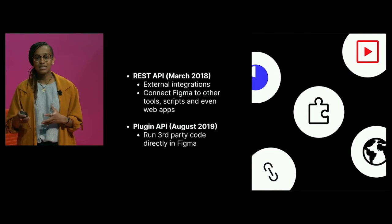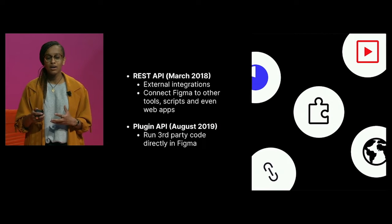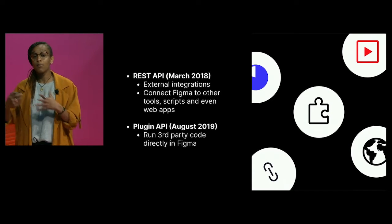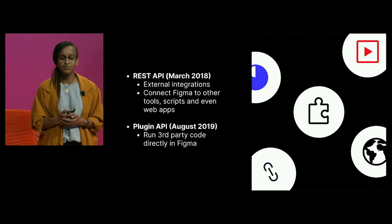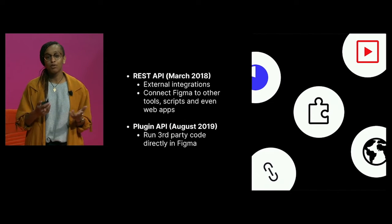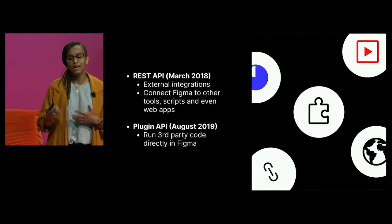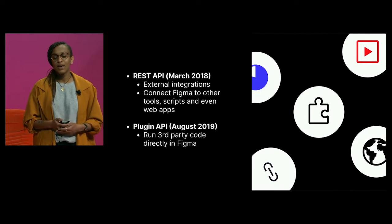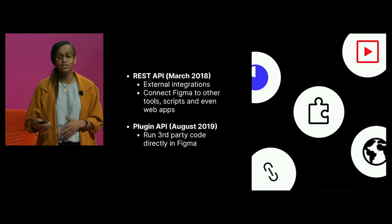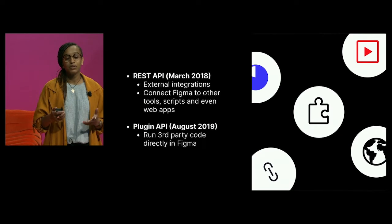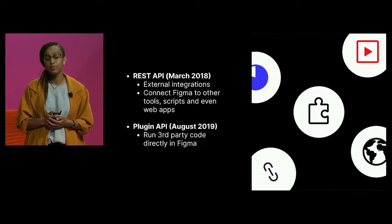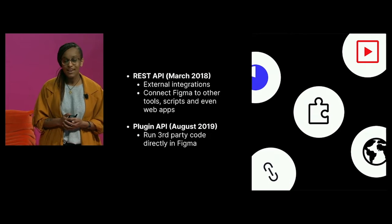As we put the different pieces in place, keeping our principles and use cases in mind, we ultimately landed on releasing two APIs for extending Figma. First, our REST API for exporting data from Figma files and connecting to third-party applications. Going back to our principles of stability and performance, an external API for pulling data out of Figma was much easier to keep stable and performant than an API built into the editor. This was less risky to launch first and more differentiated compared to other design tools at the time.